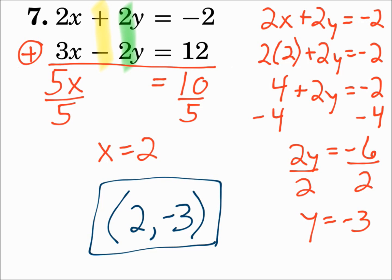Have your equations lined up. Find a variable with the same coefficient. If the signs are different, add. If the signs are the same, subtract the equations. Solve for the remaining variable, and then substitute into either equation, and solve for the other variable.